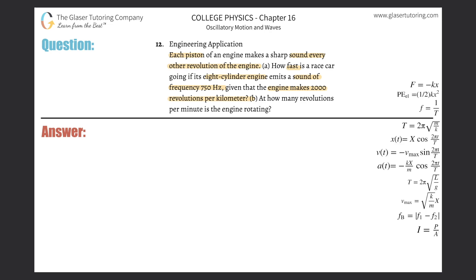That basically means there is one sound for every two revolutions. Every other revolution means that if there are two revolutions, we hear one sound. That produced one single sound per every other revolution per piston — so we write: one sound per two revolutions per single piston.